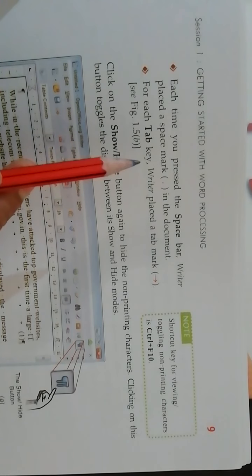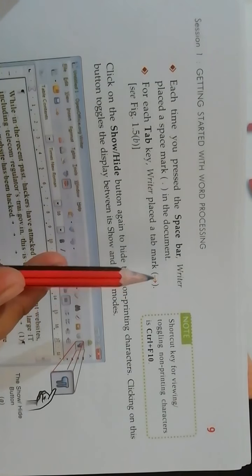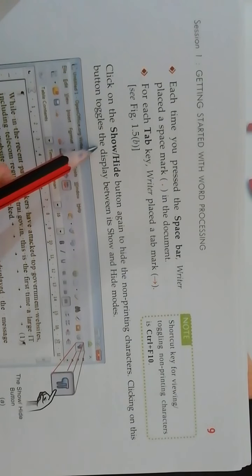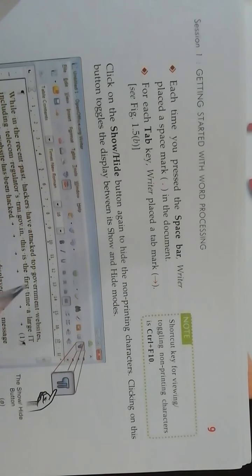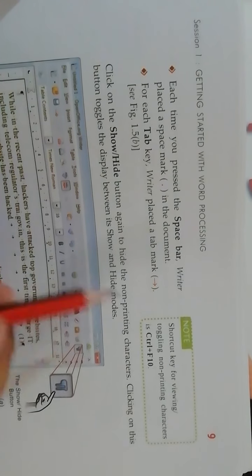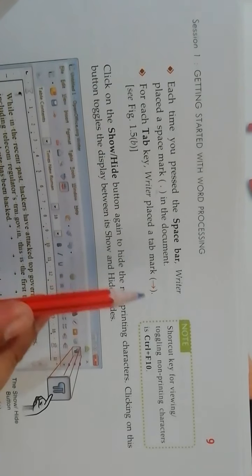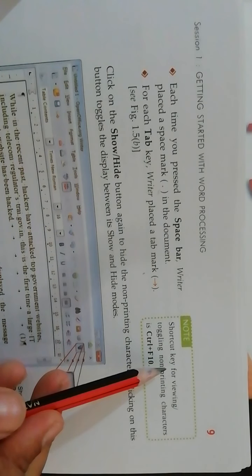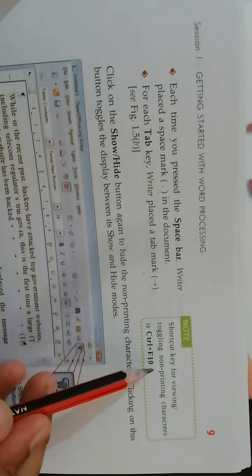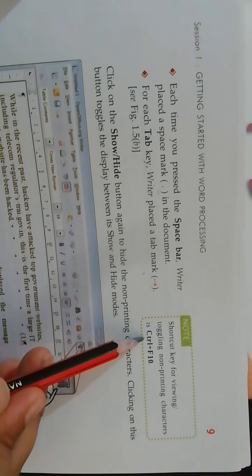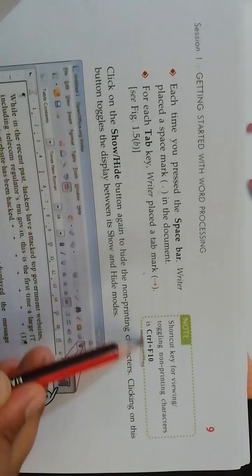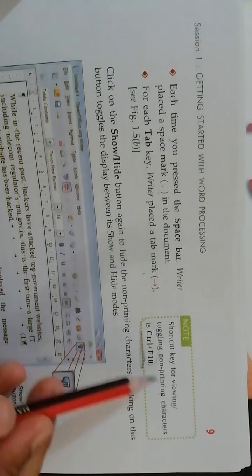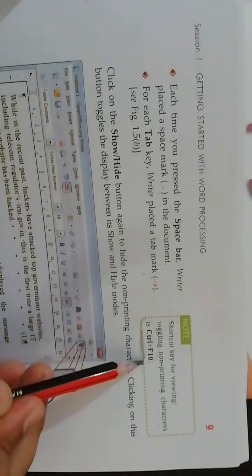For each tab key press, an arrow symbol will appear there. So these three characters — enter key shows a paragraph symbol, space bar shows a dot, and tab shows an arrow symbol. The shortcut key for toggling non-printing characters is Ctrl + F10. Write this shortcut key in your notebook. The shortcut key for non-printing character toggling is Ctrl + F10.